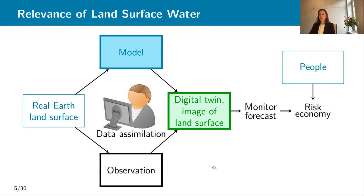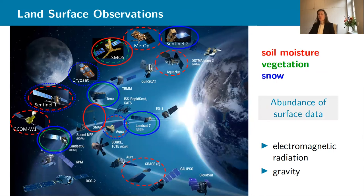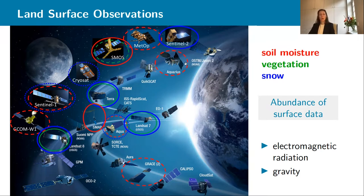We'll start with one of our tools, the observations. We could put a lot of probes in our land surface, but that is not going to work at a large scale. So if we work at a larger scale, we use satellite data most of the time. You see some examples here of different missions, colored by which variable they could potentially measure. And if they're dashed, that means the sensor is not developed for, for example, soil moisture, but you could possibly use it to detect soil moisture. We do have an abundance of missions that allow us to measure water in the land surface.